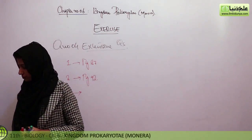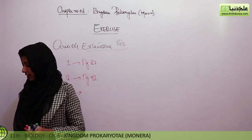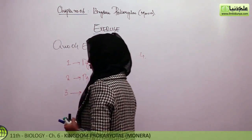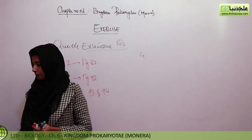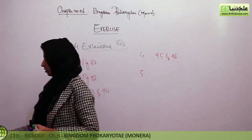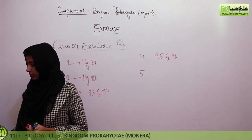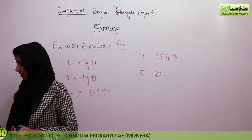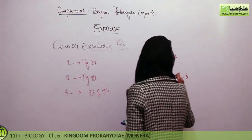Third long question: discuss the role of antibiotics in controlling bacterial diseases, and what problems can arise due to misuse of antibiotics. This entire topic is on pages 93 and 94. Fourth question: describe the general characteristics of cyanobacteria with special reference to Nostoc — this is on pages 95 and 96. Write notes on Koch's postulates, shape of bacteria, flagella, and pili. Koch's postulates are at the start, on page 93; flagella and pili are on pages 86 to 88.